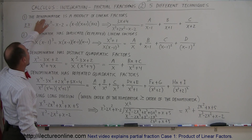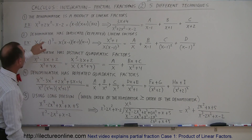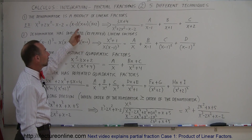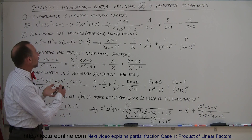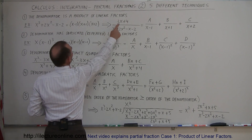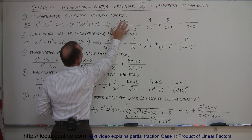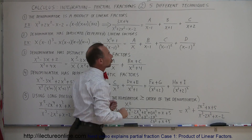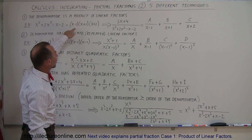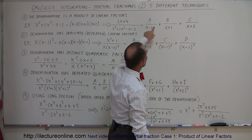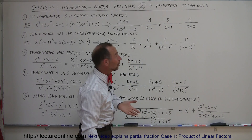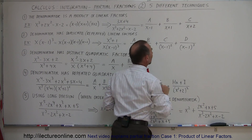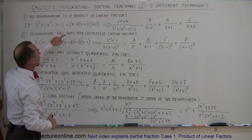The first type is where the denominator is a product of linear factors. If you end up with something like this in the denominator and you can factor it, notice that each one of these factors of the denominator is a linear function of x. You write this as a over x minus 1, plus b over x plus 1, plus c over x plus 2. Once you figure out what the constants a, b, and c are, you can integrate each of these separately, much more easily than trying to integrate the original expression.